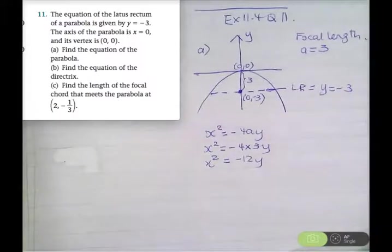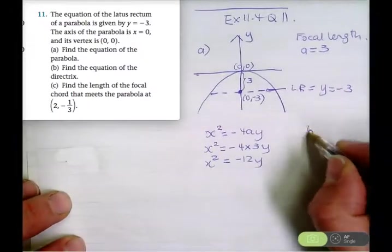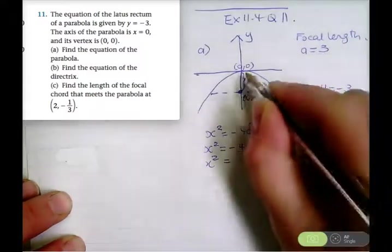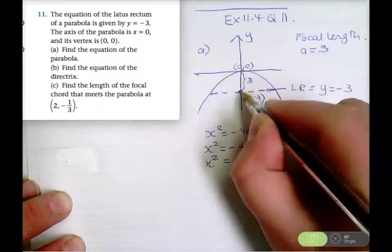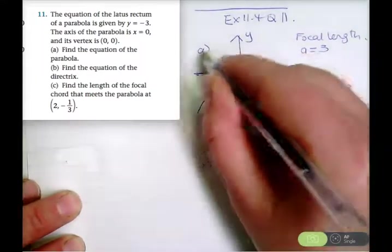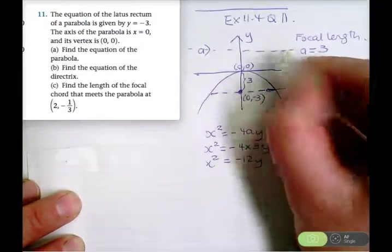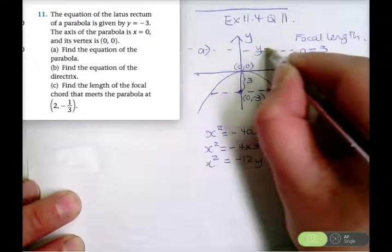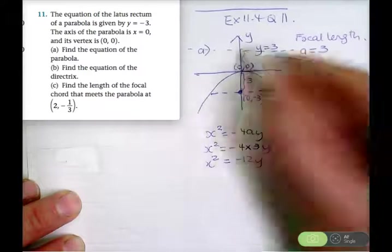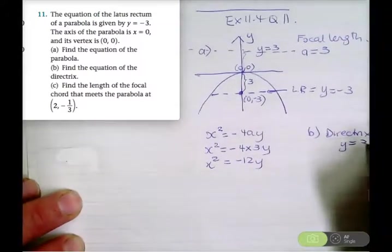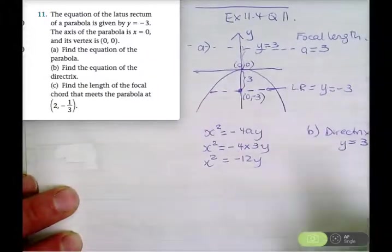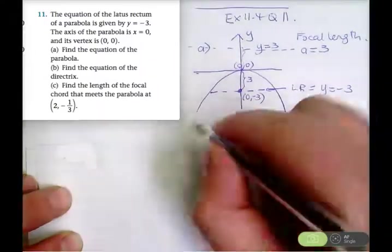Part B: the equation of the directrix. Remember the vertex is always halfway between the focus and the directrix. The directrix will be 3 units up from the vertex, so the equation of the directrix is y equals 3.